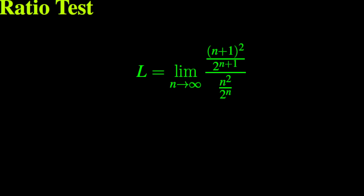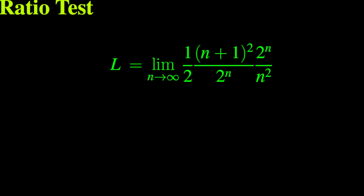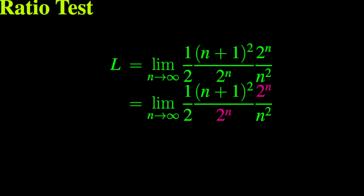Now let us compute the limit of the ratio of this series. We set L as the limit as n goes to infinity of the fraction with numerator n plus 1 squared over 2 to the power n plus 1, and denominator the fraction n squared over 2 to the power n. We can simplify by expanding 2 to the power n plus 1 as 2 times 2 to the power n, which reveals a common factor of 2 to the power n in the numerator and the denominator.